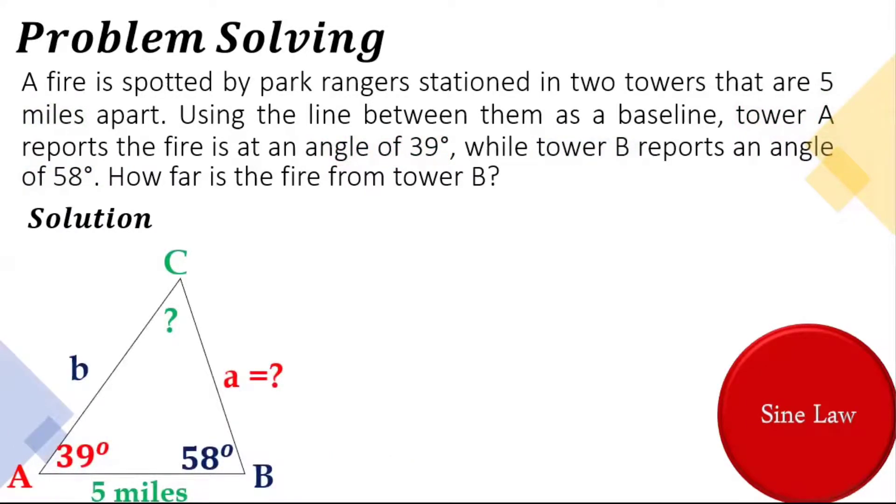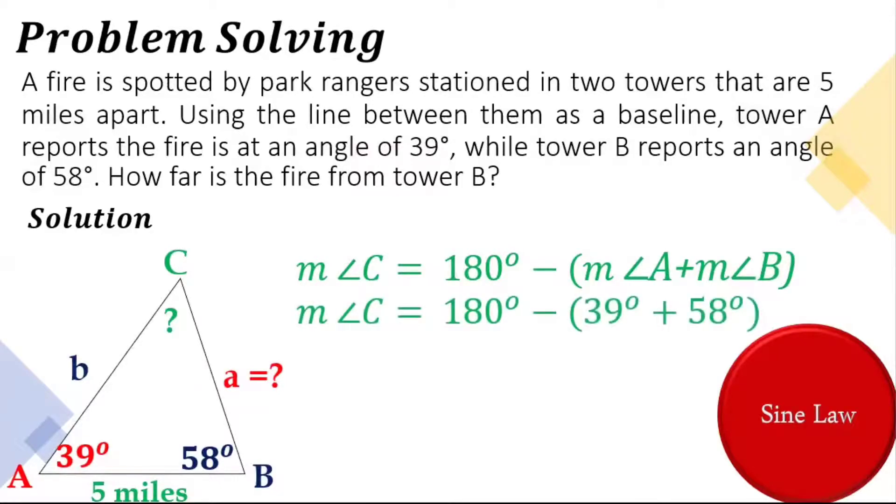So let's solve for the measurement of angle C, which is the fire's location. Measurement of angle C is equal to 180 degrees minus the given angles, the angle A and angle B. So we have here 39 degrees plus 58 degrees, and it gives us 97 degrees. So let's subtract that to 180 degrees, and angle C is equal to 83 degrees.